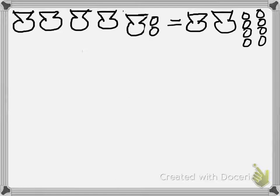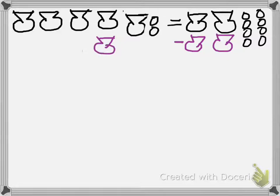The first thing we need to do is see how many pouches we can undo on both sides. I see 2 pouches on this side, so we're going to take 2 pouches and remove them — minus them on this side. Remember, what we do to one side we have to do on the other. Mr. Sproul is learning how to draw with the stylus — it's not as easy as it looks. So we're going to minus 2 pouches on both sides and cross those out on each side.